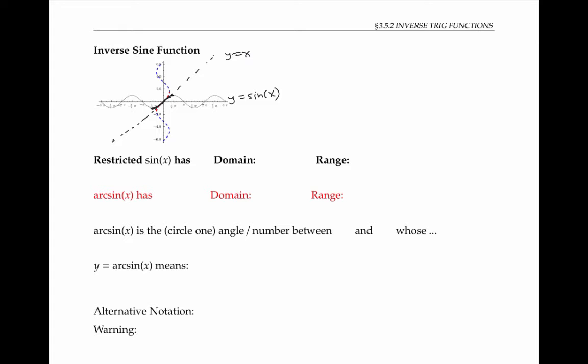If I invert that piece by flipping it over the line y equals x, I get the piece drawn with a red dotted line here. And that piece does satisfy the vertical line test, so it is in fact a function. Although regular sine x has domain from negative infinity to infinity,